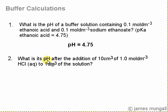The question now is what is the buffer solution's pH after the addition of 10 centimetre cubed of 1 mole per decimetre cubed HCl to 1 decimetre cubed of the solution. We would expect the pH to go down because you've added some acid, but not too much because this is a buffer solution.